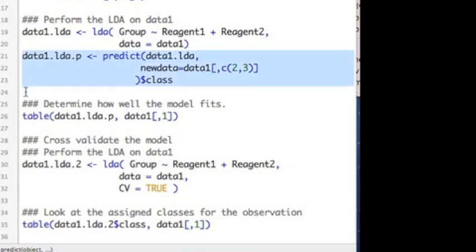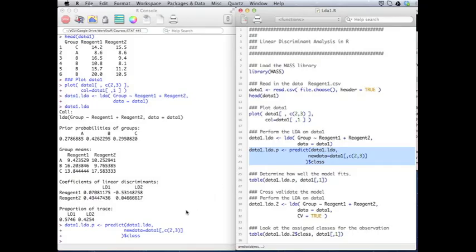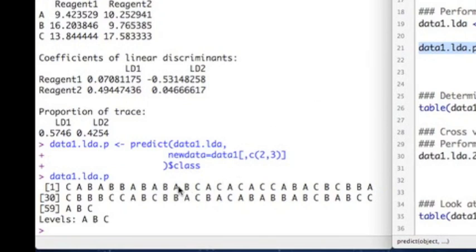So if I run this, I'm writing it into an object called data1.lda.p. And these are my classifications when I look at it. So it just gives me the classifications that are in the predictions. So this is what it determined they should be predicted to be.